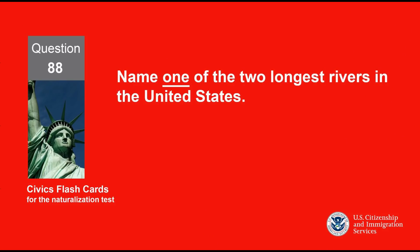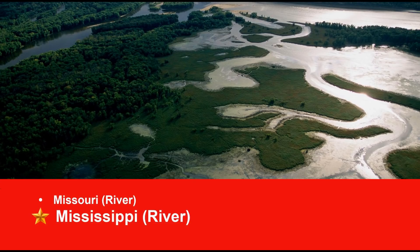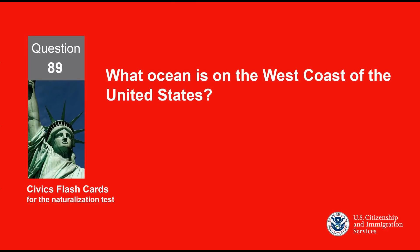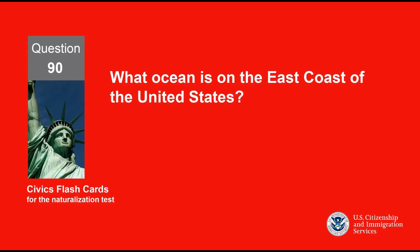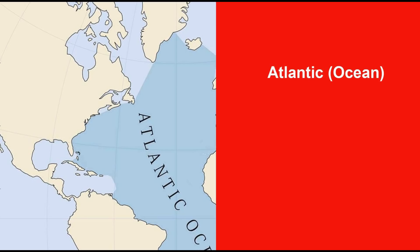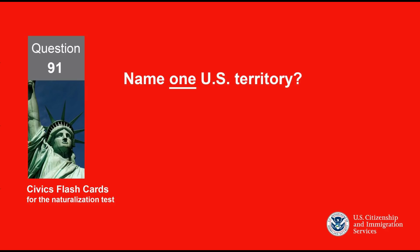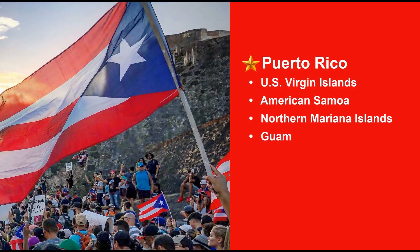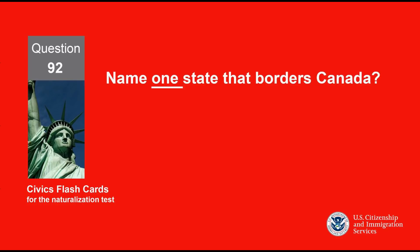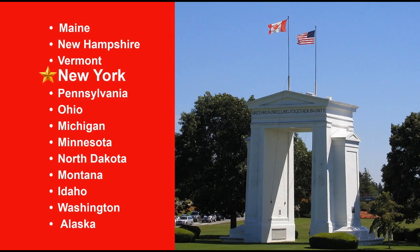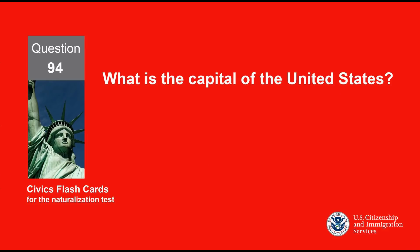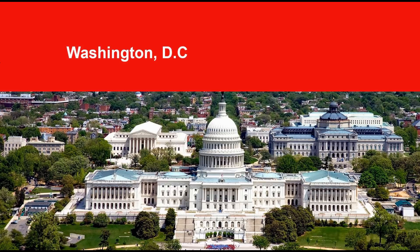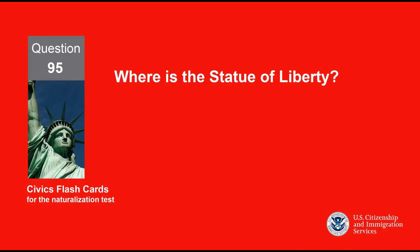Name one of the two longest rivers in the United States. Mississippi. What ocean is on the west coast of the United States? Pacific Ocean. What ocean is on the east coast of the United States? Atlantic Ocean. Name one U.S. territory. Puerto Rico. Name one state that borders Canada. New York. Name one state that borders Mexico. New Mexico. What is the capital of the United States? Washington, D.C. Where is the Statue of Liberty? New York.